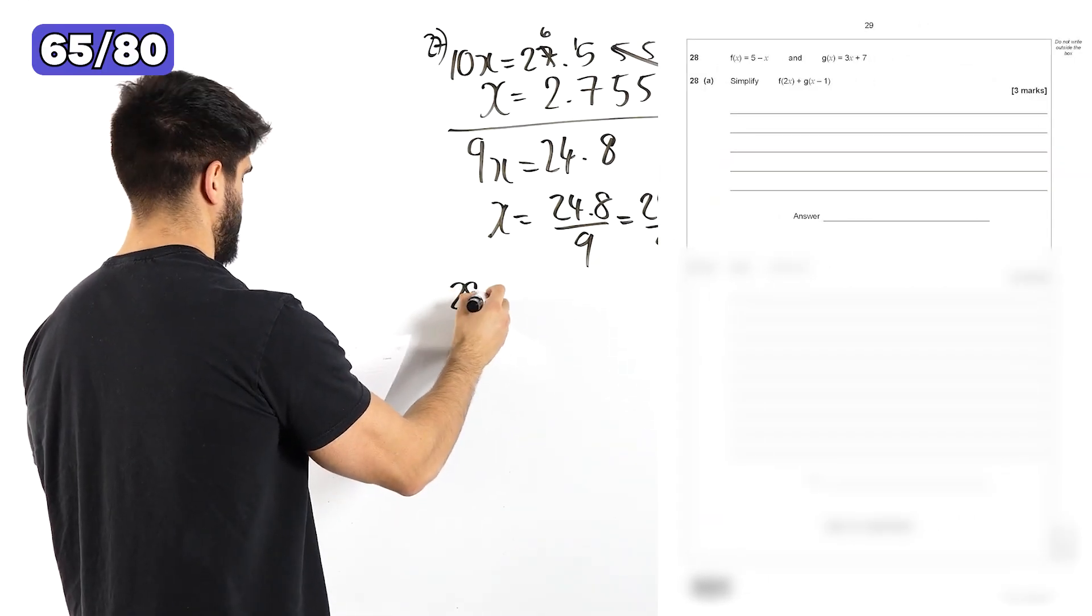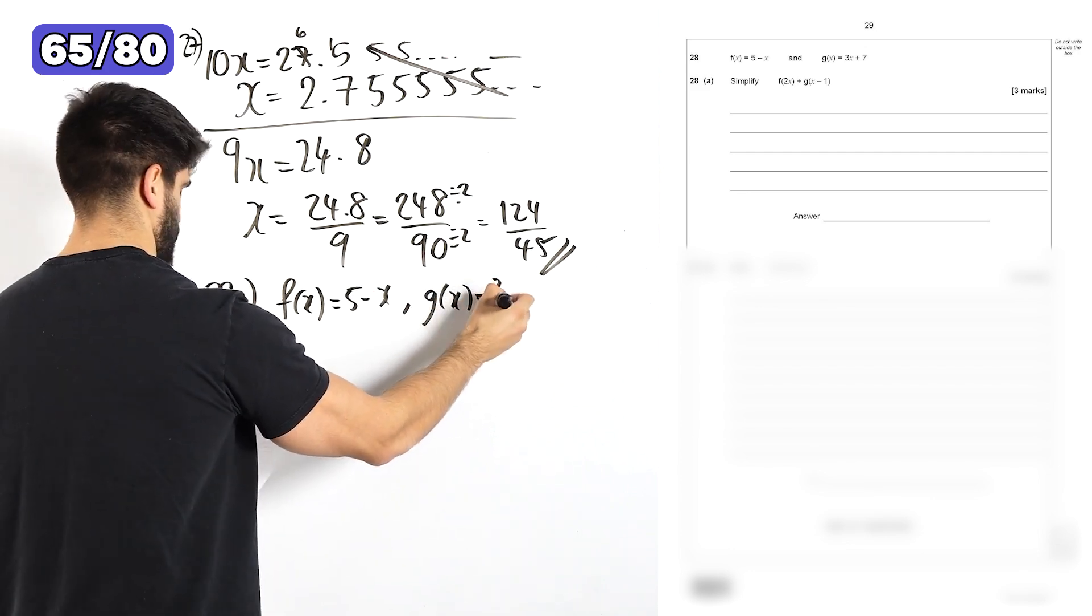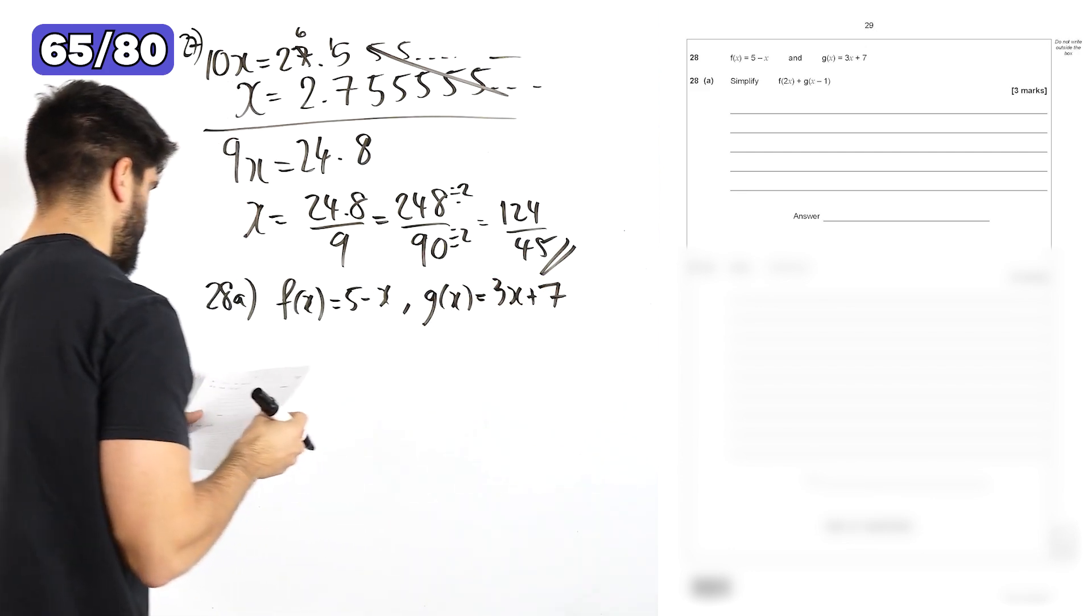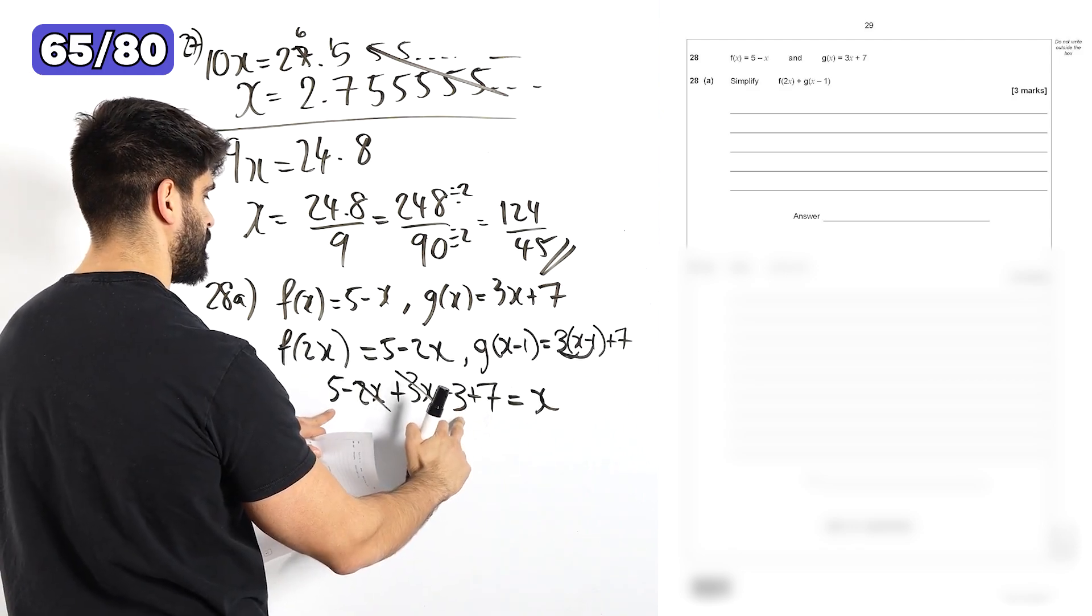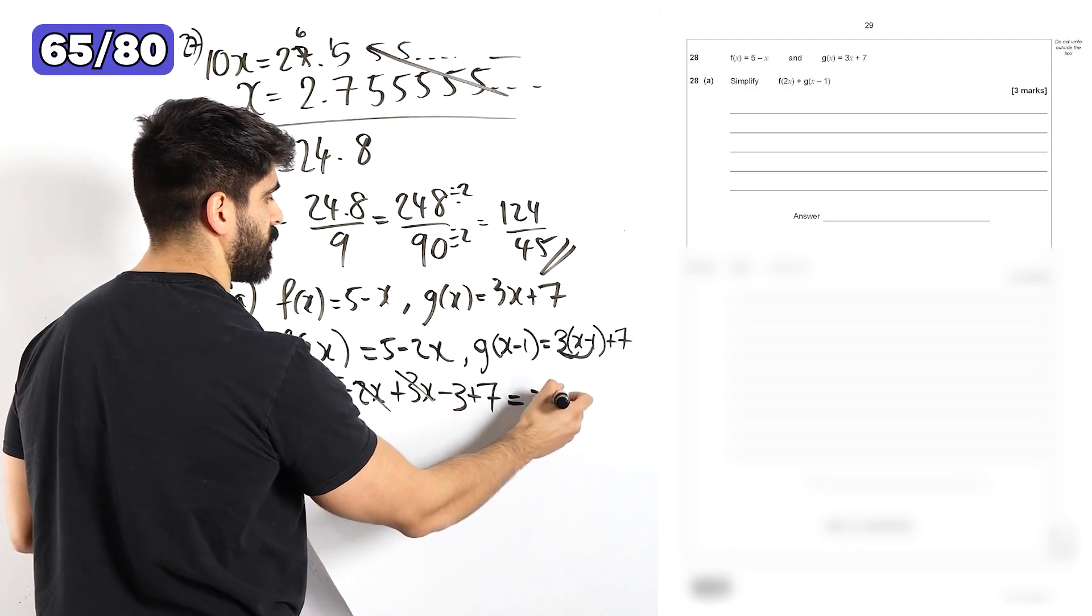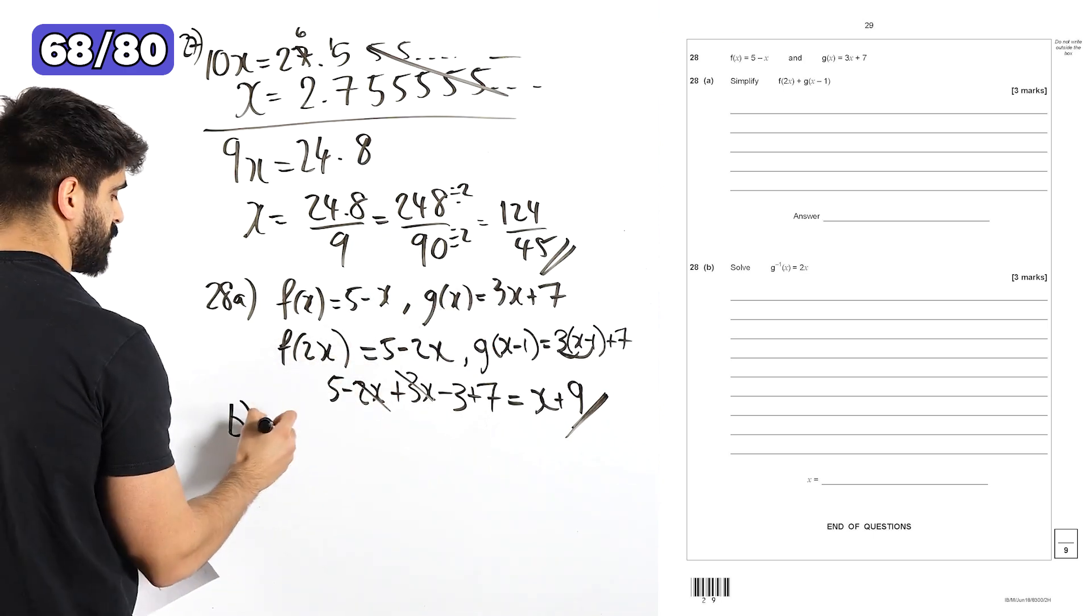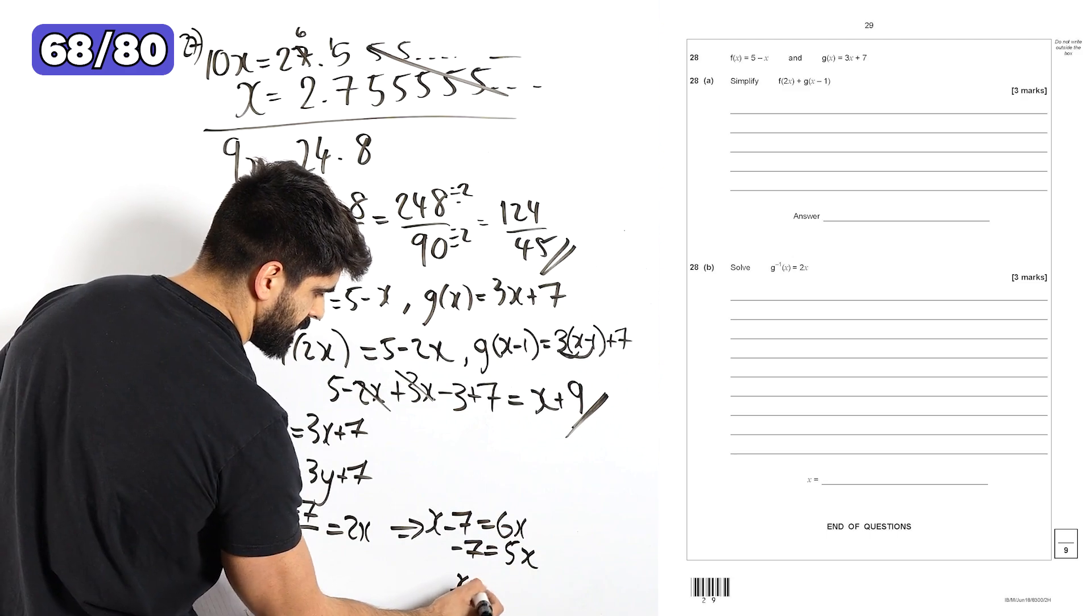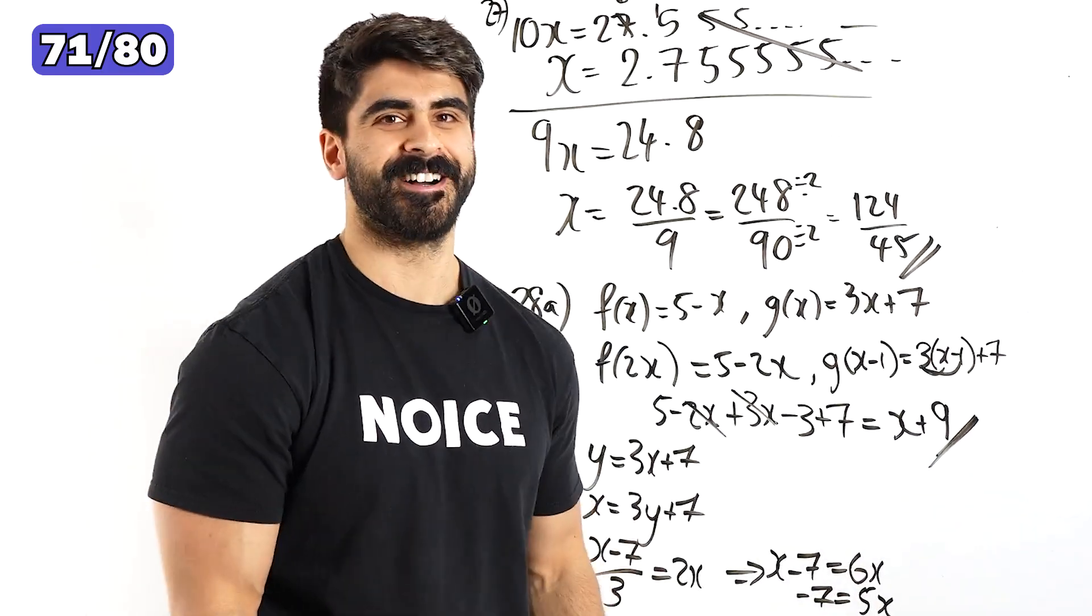Last question. 28a. f of x is 5 minus x. g of x is 3x plus 7. Simplify f of 2x plus g of x minus 1. 5 minus 3 is 2. 2 plus 7 is 9. Solve the inverse of g as 2x. So the inverse of g, we let y equal this. x is minus 7 things. Done. And I don't need to check my work.